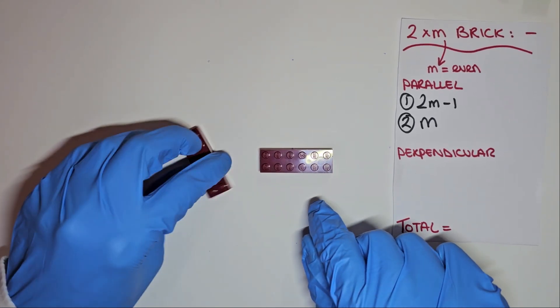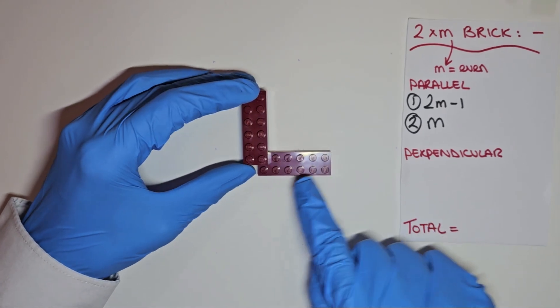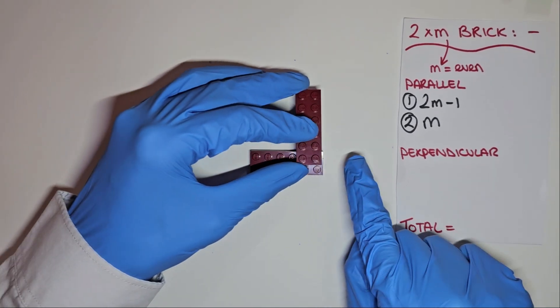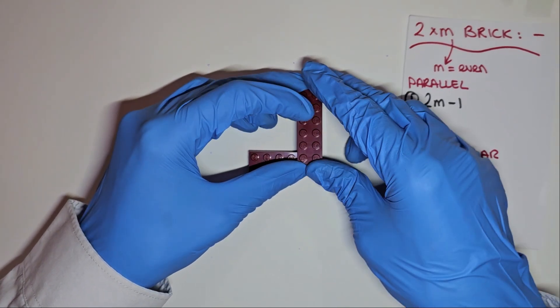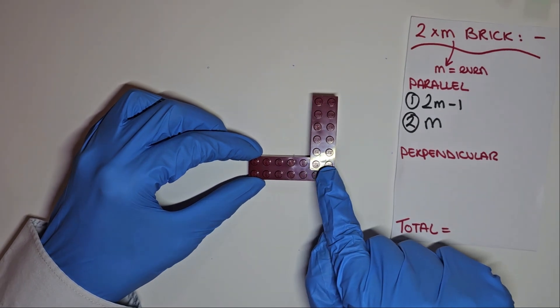Switching our top piece to perpendicular, we can start counting our other combinations. If we keep track of the last stud, we can continue clicking our way along until we reach the end, m, and we can also have one hangover, like so, plus 1. In total, m+1 combinations.